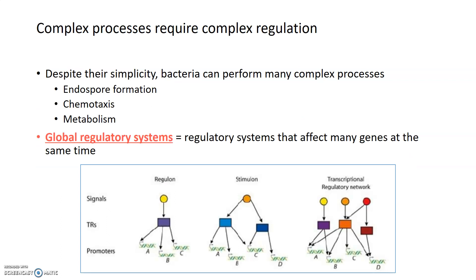Even though bacteria are relatively simple organisms and they're unicellular, they can perform a lot of really complex processes. Some of which we've talked about in class already, such as the formation of endospores, chemotaxis, or the ability to move towards or away from attractants and repellents respectively, as well as complex metabolic processes like fermentation and ATP generation. All of these complex processes require complex regulation at the level of gene expression.